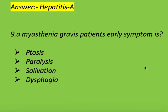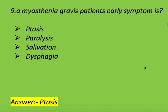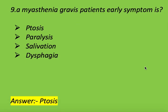Next question: in myasthenia gravis patients, what is the early symptom? Options: opsonization, ptosis, carolysis, salivation, and dysphagia. Right answer is ptosis. In myasthenia gravis patients, the early symptom is ptosis.